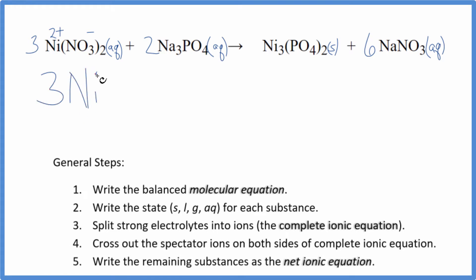And I won't write the states right now. I'll write them at the end. Plus we have two of the nitrate ions. Then sodium, group one on the periodic table, that has a one plus. And the whole phosphate, that has a three minus. So we have three times two, we have six sodium ions.